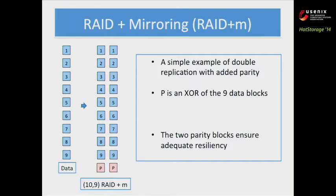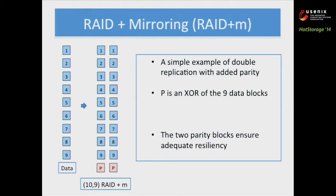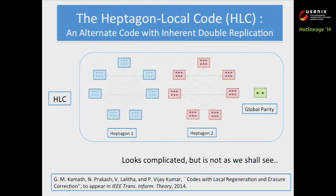In this example, you have nine blocks, they are replicated twice, and P is just an XOR of these nine blocks. P itself is replicated for extra resiliency. This scheme is commonly called the 10/9th Rate-Plus-M. This code has the same resiliency as standard Hadoop. The question of interest is: can you come up with other erasure coding schemes that can outperform this kind of scheme?